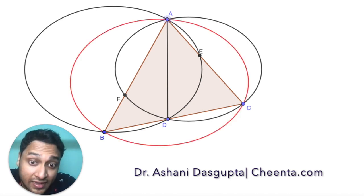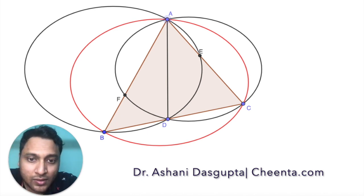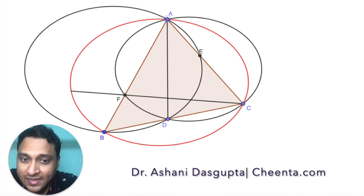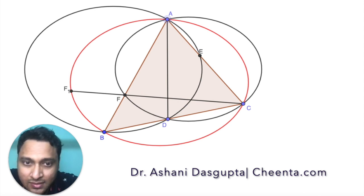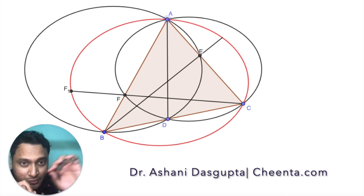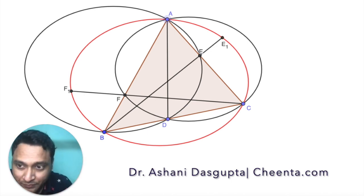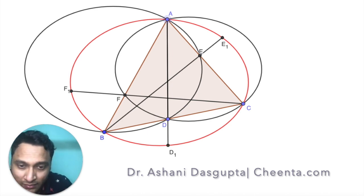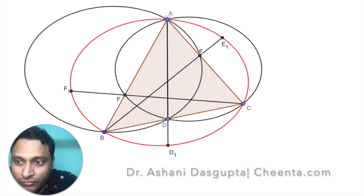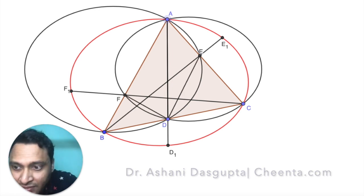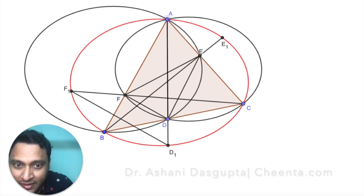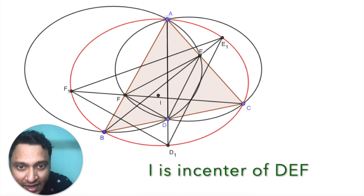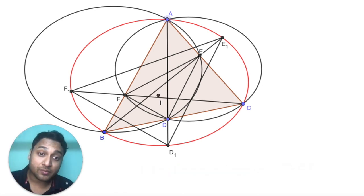We will also draw the circumcircle through ABC. Now let's join CF and produce it to hit the red circle - the red circle is the circumcircle of ABC - and call that point F1. Similarly, we join BE and produce it to meet the red circle at E1, and extend AD to meet the red circle at D1. We will draw two triangles DEF and D1E1F1, and mark the incenter of DEF as I.